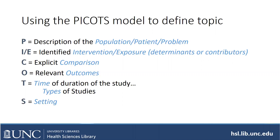The P can be population, a patient, or a problem. For example, population would be more than one person — it could be elderly residents of a nursing home with diabetes. It could be a patient, like a 65-year-old man with hypertension, or it could be a problem, a specific disease. The I — which can also be an E — would be either an intervention or an exposure. An intervention would be a specific kind of treatment or drug.